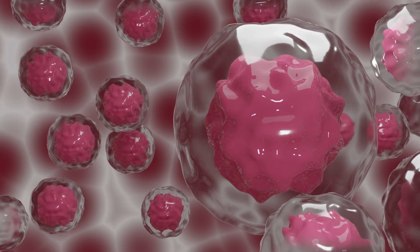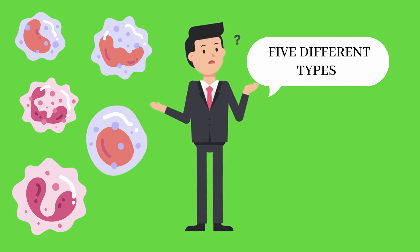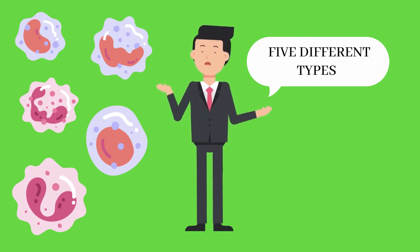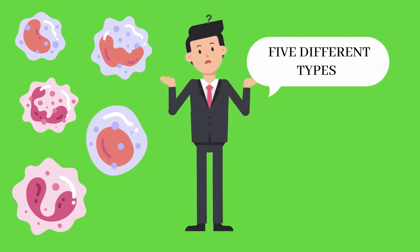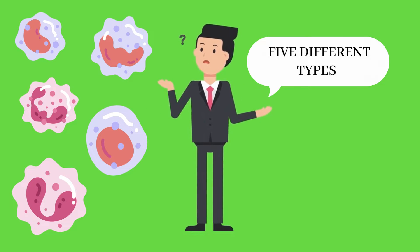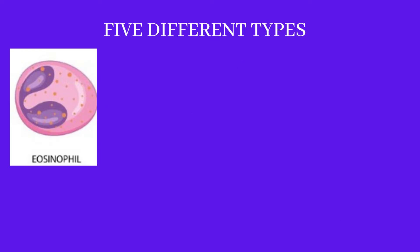There is only one type of red blood cells, but there are five different types of white blood cells. We can distinguish these five types of white blood cells on two bases: the first is the shape of the nucleus, and the second is the density of granules in the cytoplasm.